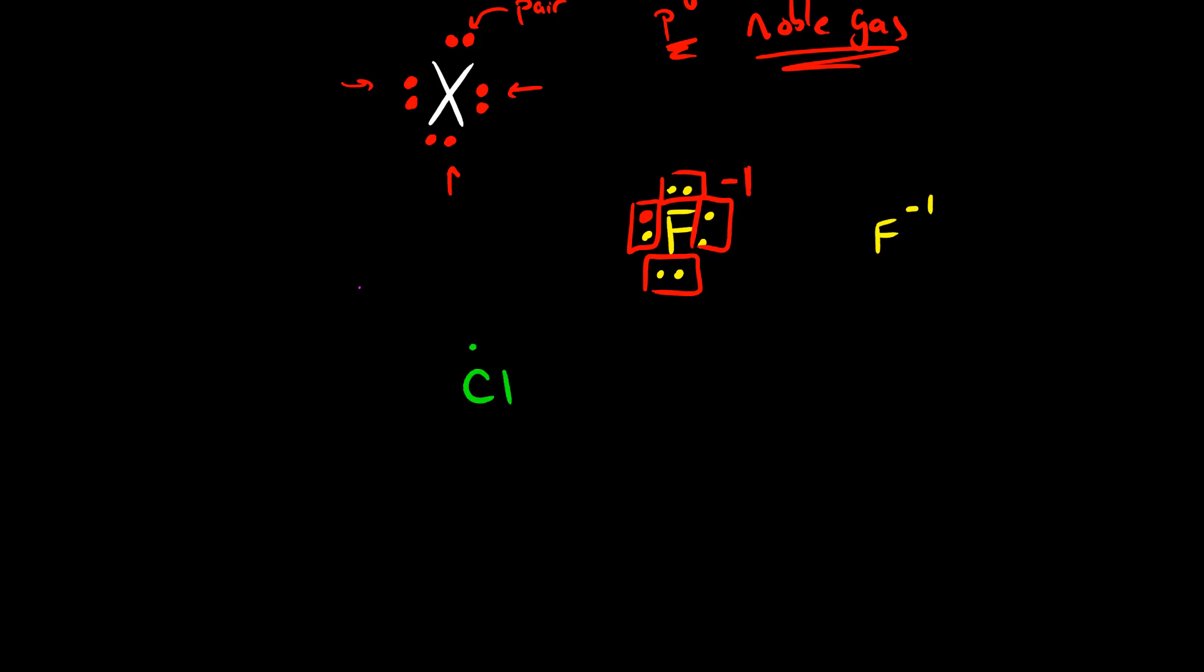The same thing goes with chlorine. Chlorine starts off with seven valence electrons. If we give it one more, that gives it a negative one charge and this whole structure, all of this configuration is stable because chlorine has an octet.